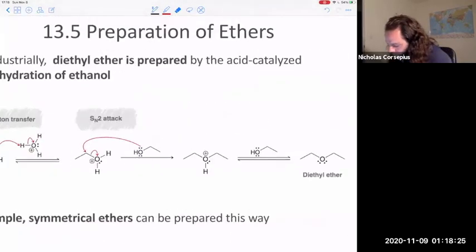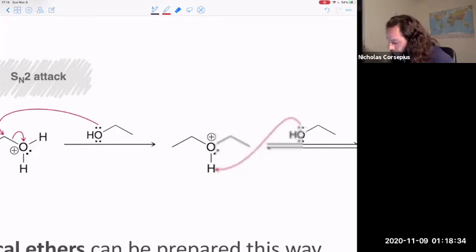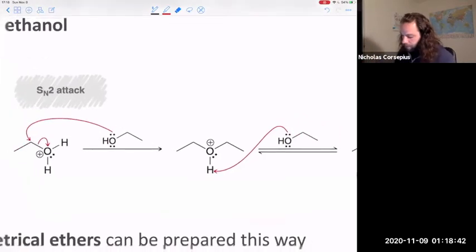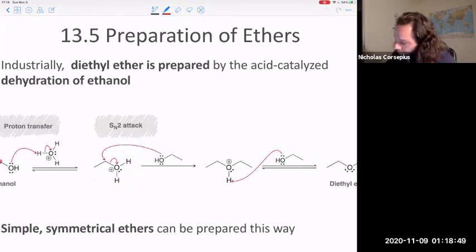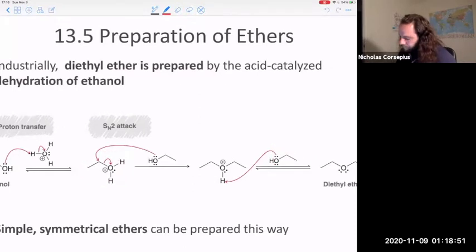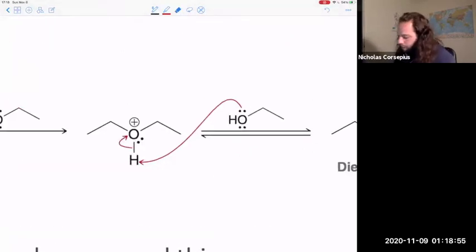So another ethanol molecule will reach around and play the role of a nucleophile attacking that electrophilic alpha carbon and kicking off that water leaving group. So first step would be a proton transfer, and then you have this SN2 style nucleophilic attack. This leaves us with this protonated ether here. So what's going to have to happen? Some base is going to come along and receive this proton. If you have a big solution of alcohol, it's probably going to be another alcohol molecule.